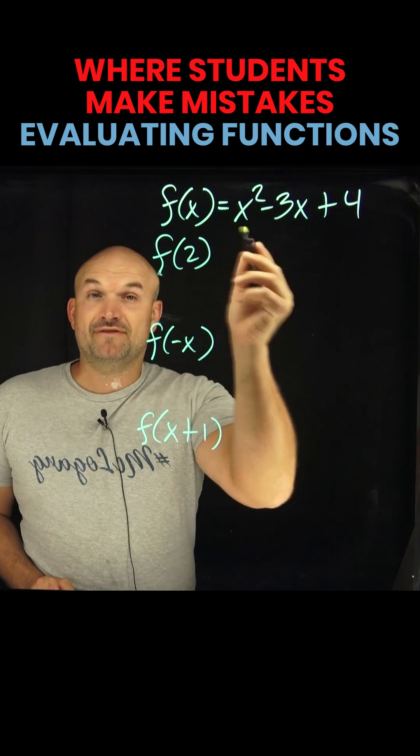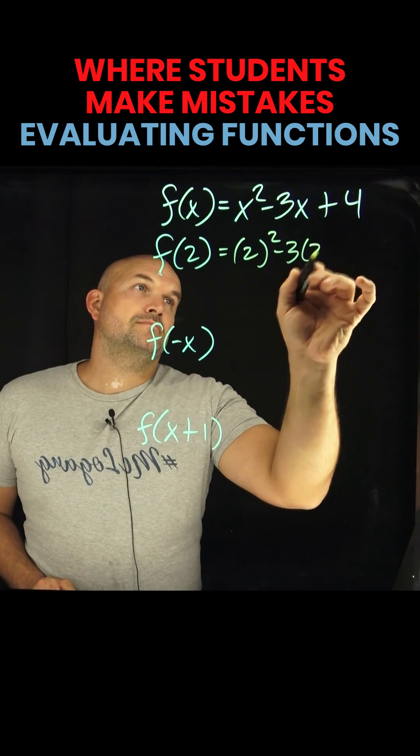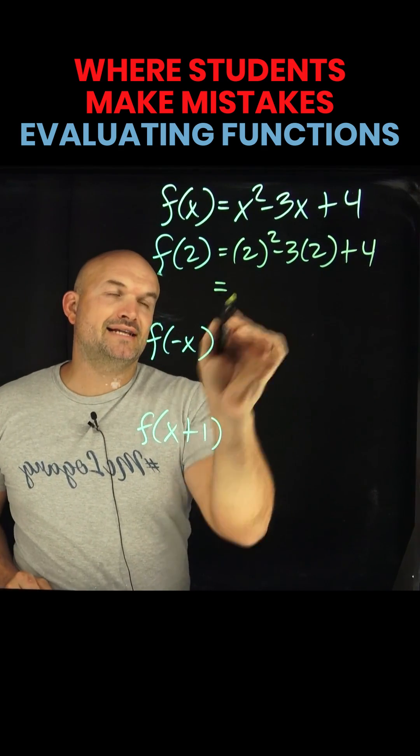So in this first one, I'm just going to say f of 2. I'm just going to replace a 2 in for the x. And now I just go ahead and simplify to find the value.